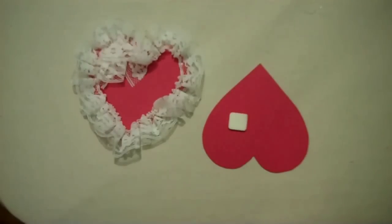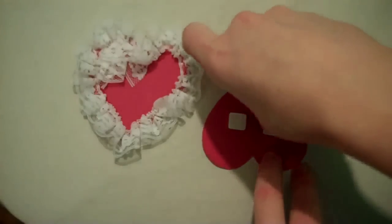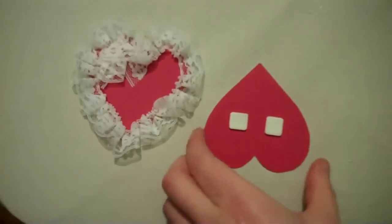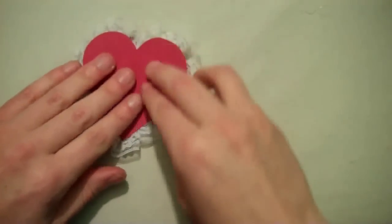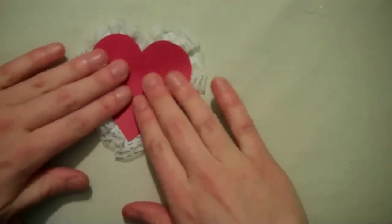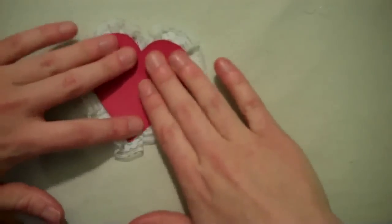Next, place two foam stickers on the back of the second cardstock heart. Then place that heart on top of the lace, lining up the edges with the heart beneath it. This should create a sandwich with the heart and the lace.